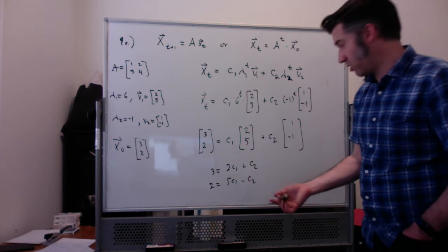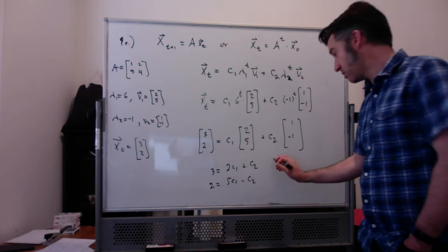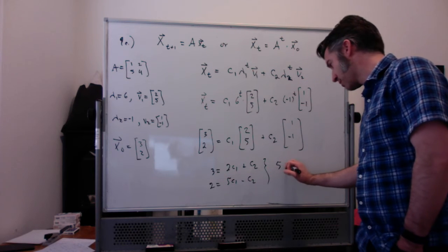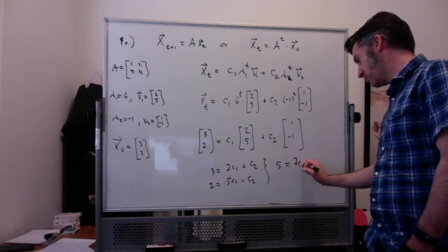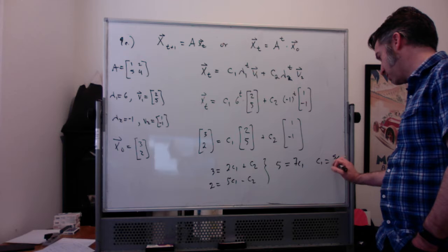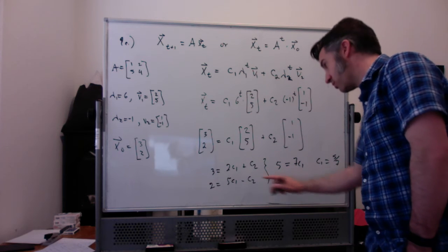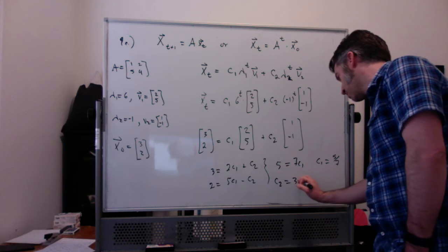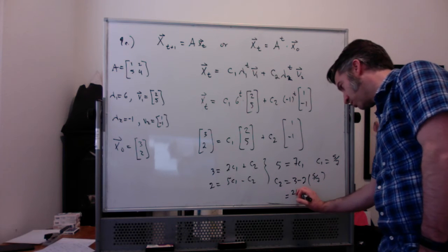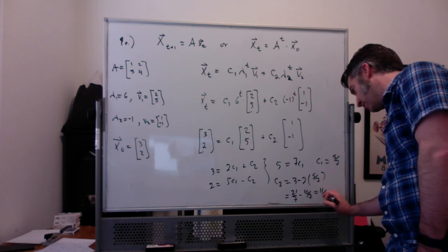We happen to have a nice situation here where if you add these two equations together, the c2s will cancel out. 3 plus 2 is 5, 2c1 plus 5c1 is 7c1. So c1 equals 5 over 7, and then I can solve for c2. c2 equals 3 minus 2 times c1, which is 5 sevenths. So that's going to be 21 sevenths minus 10 sevenths, which is 11 sevenths.